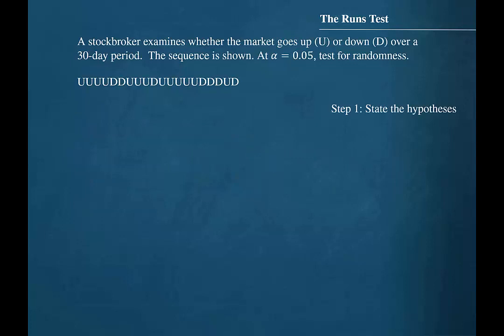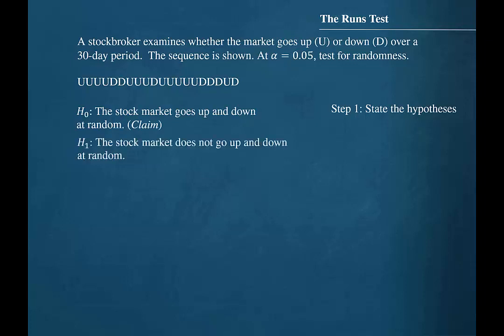Step 1 is to state the hypotheses. The null hypothesis will be that the stock market goes up and down at random, which is the claim. The alternative hypothesis will be that the stock market does not go up and down at random.